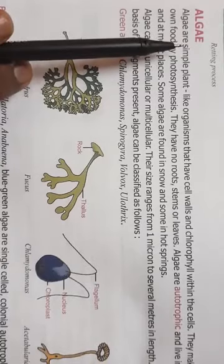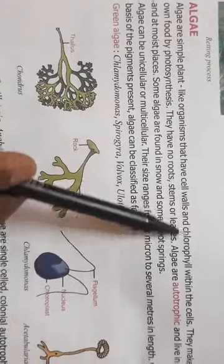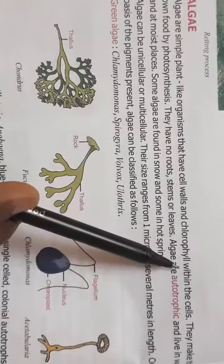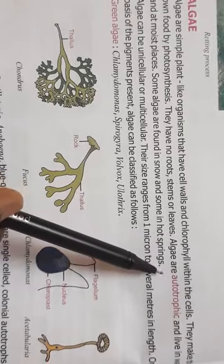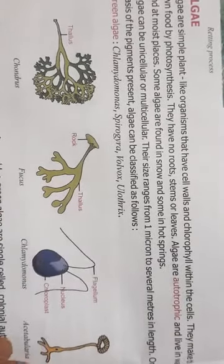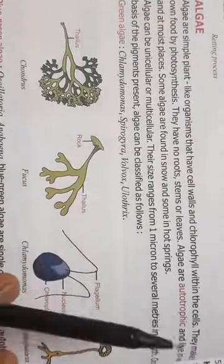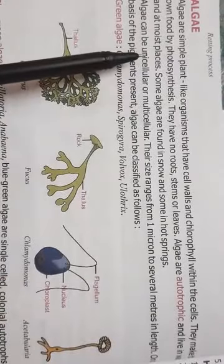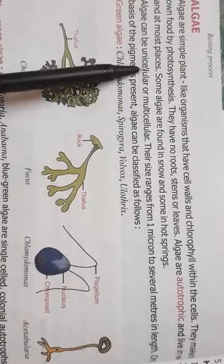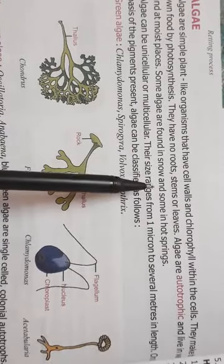Algae are plant-like organisms. They have chlorophyll within the cells, and you all know that algae are autotrophic in nature. That is, they can synthesize their own food. Algae are usually found in water and at moist places. Some of the algae are also found in snow and in hot springs.